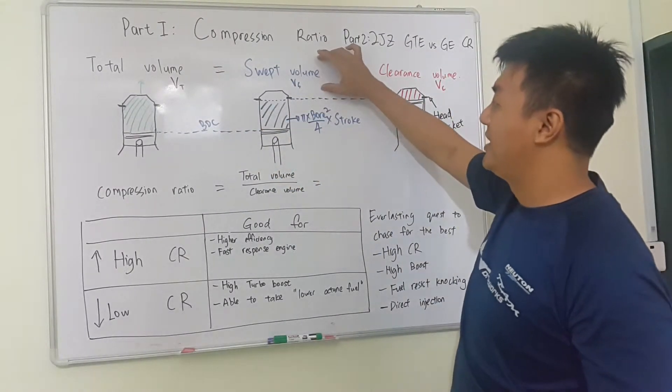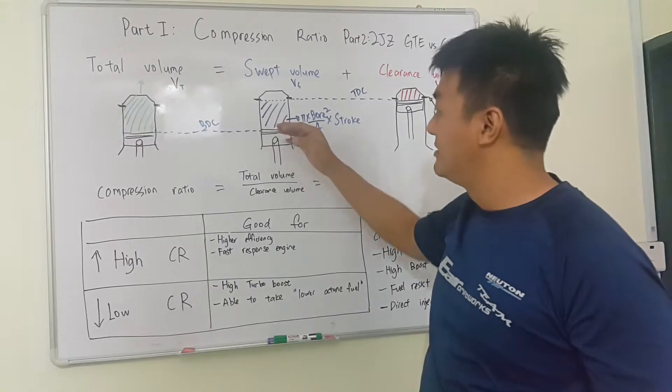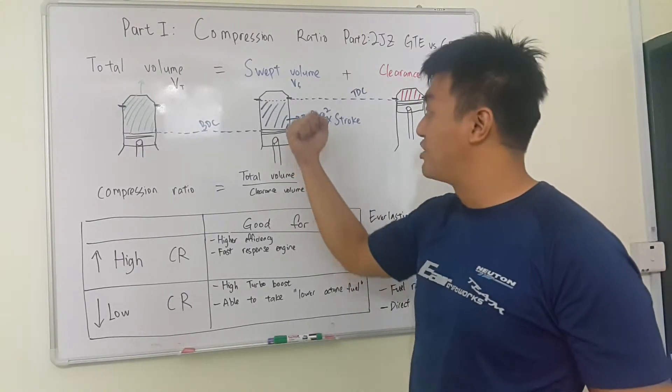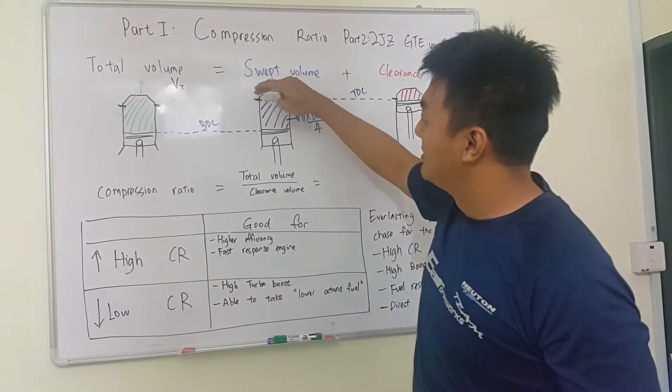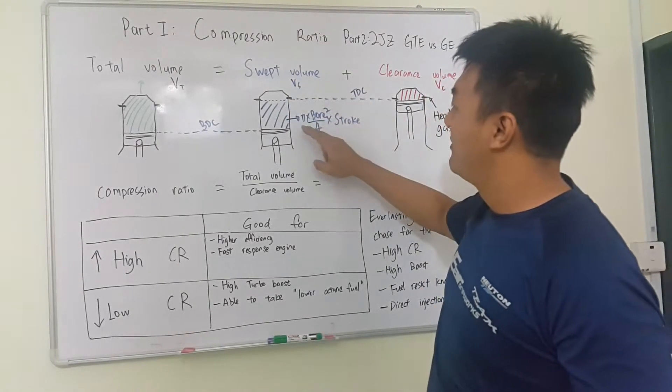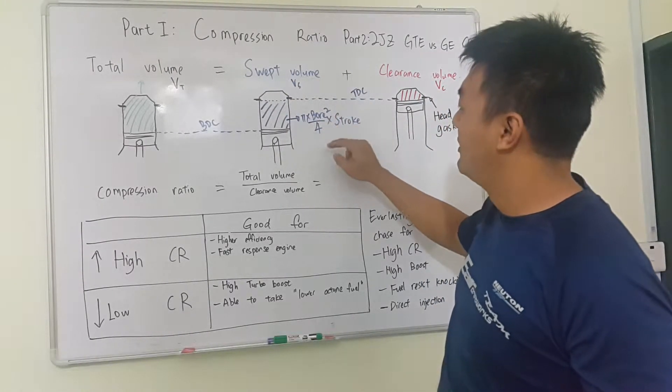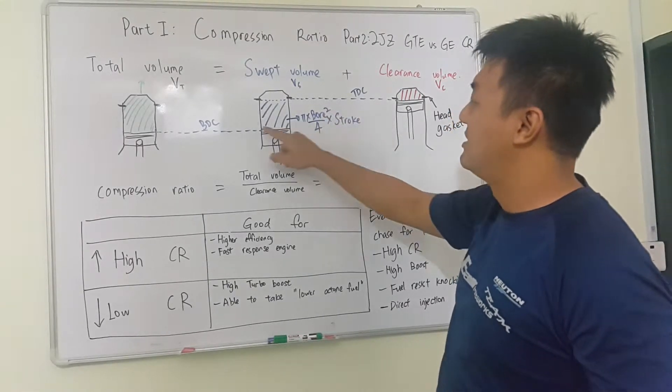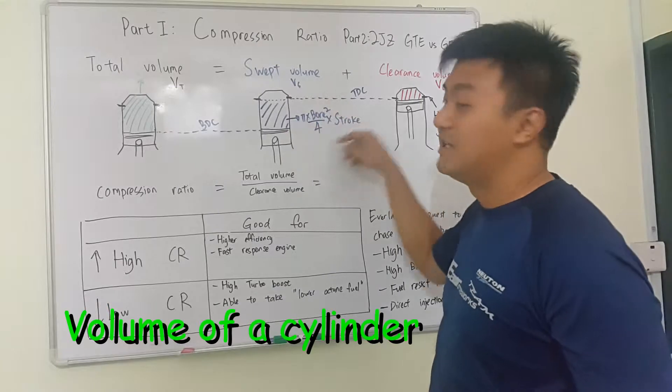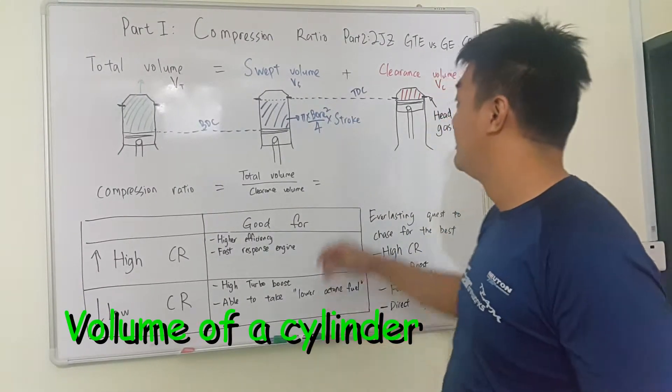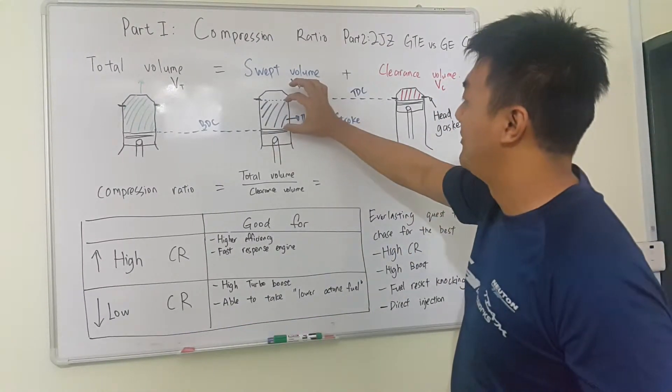Swept volume is the volume of the air that is swept. That means that it is compressed or that it is pulled in by the piston. It is calculated by pi D square over 4. D is the bore of the piston times stroke. This is just a formula for cylinder, so this one is the swept volume.